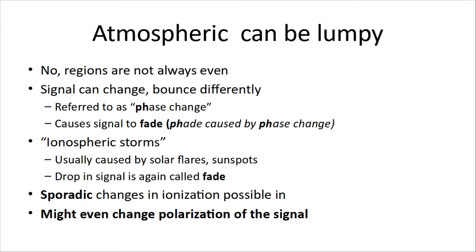Atmospherics can be lumpy — those regions are not always even. The signal can change and bounce differently; this is referred to as phase change, and it causes signals to fade. We also get ionospheric storms caused by solar flares and sunspots, and a drop in signal due to ionospheric storms is also called fade. We can get sporadic changes in ionization, and some of those changes can even affect the polarization of the signal. A vertical antenna emits vertically polarized signals, a horizontal antenna emits horizontally polarized signals — and that polarization can be shifted by sporadic changes in the ionosphere.